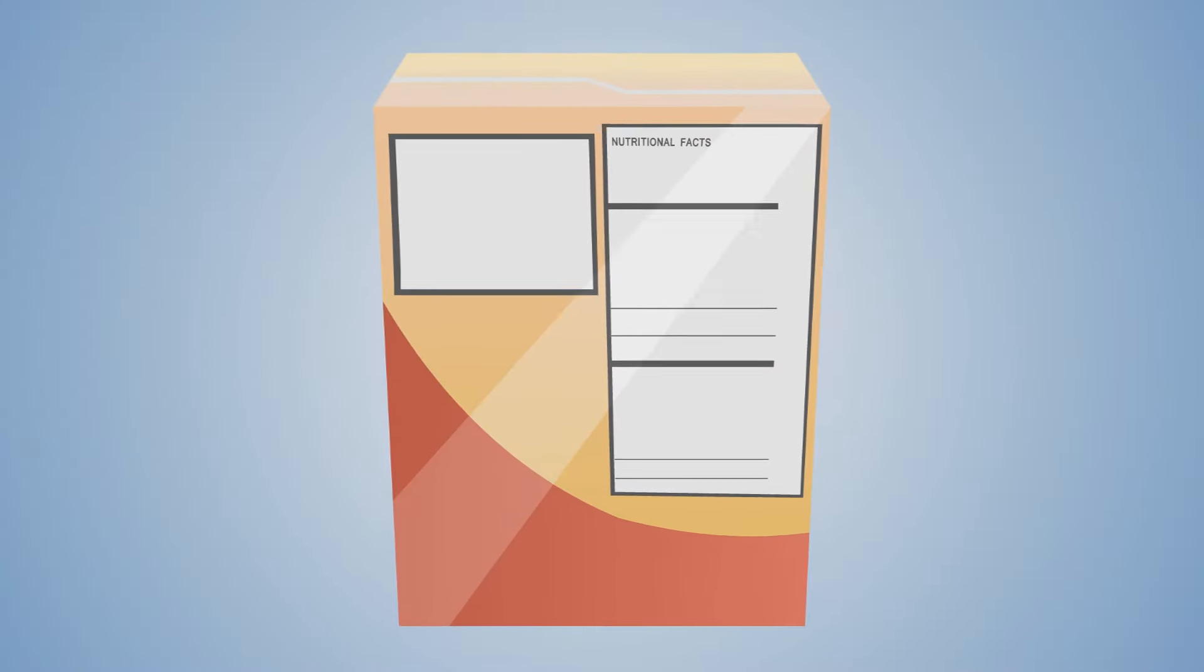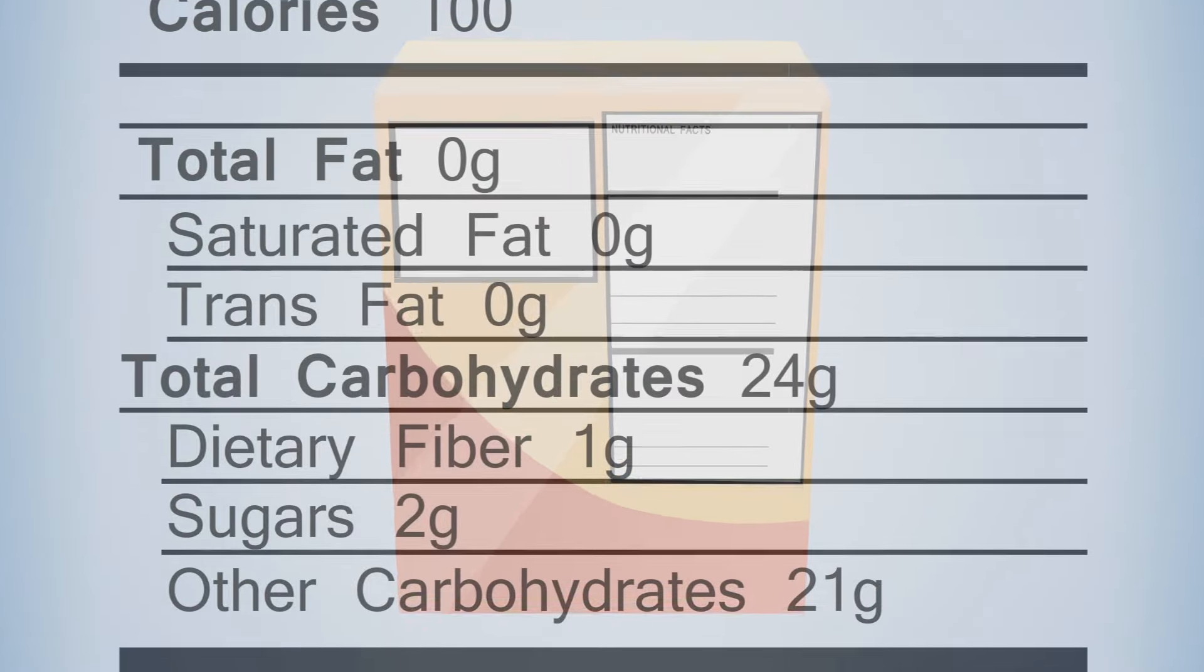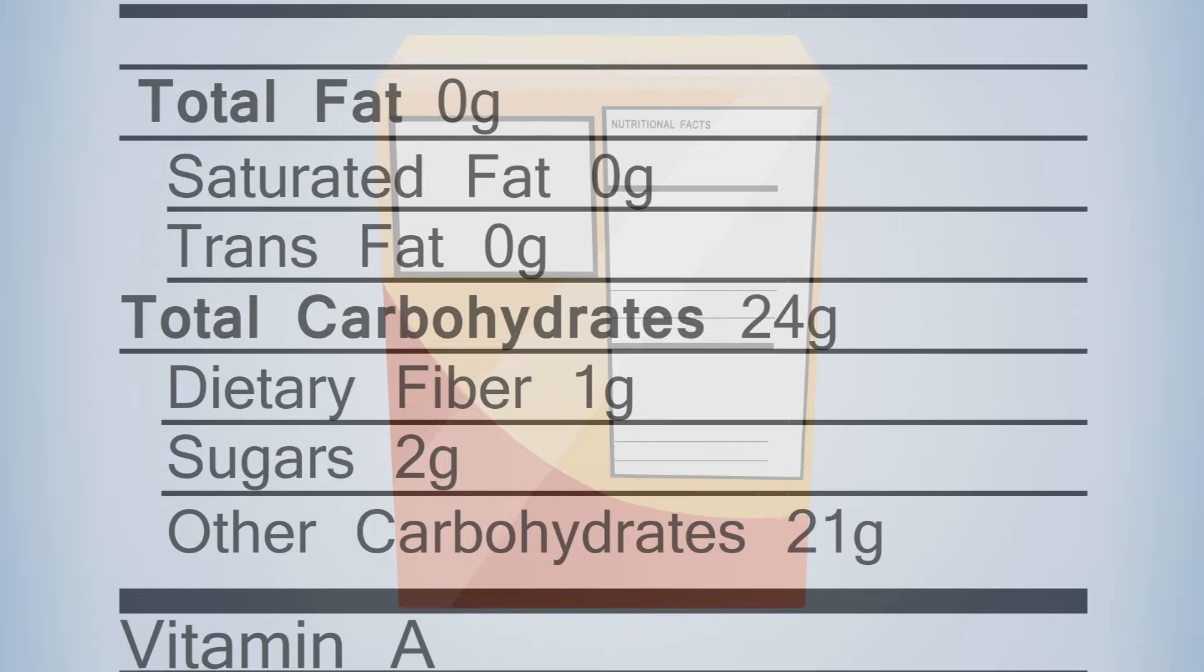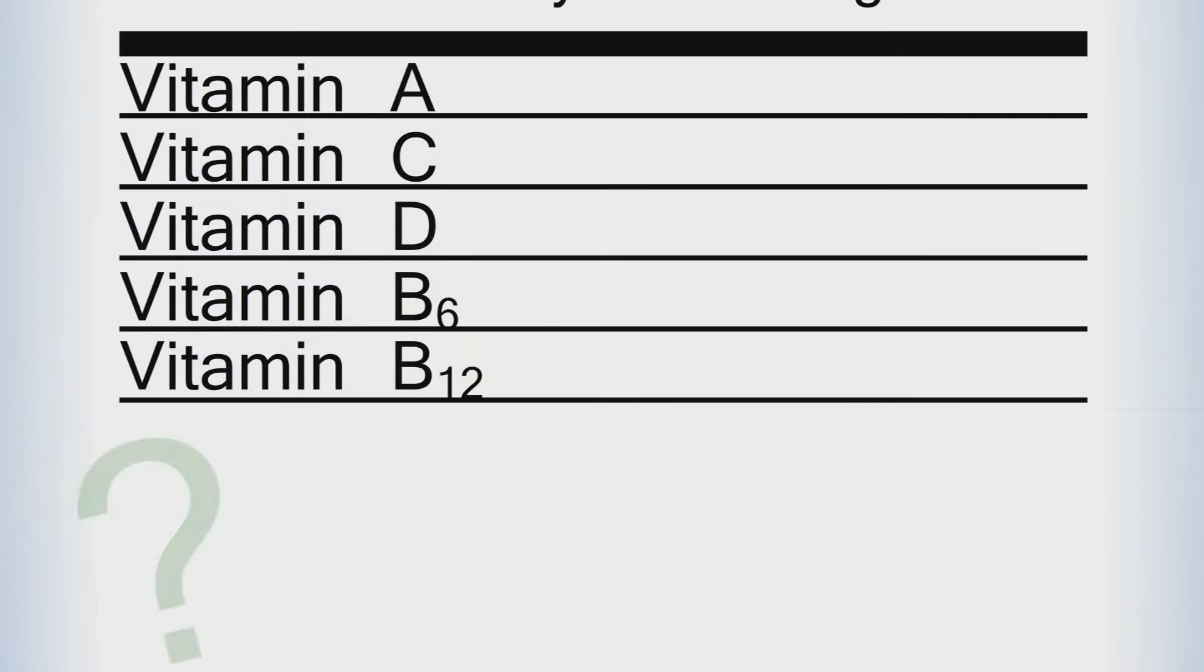When you look at the back of your cereal box, you'd probably look at the calories and maybe the carbohydrates, but what about all of those vitamins? How many are there? Do we really need them all?